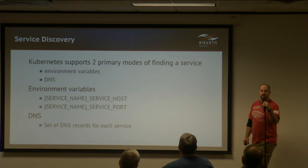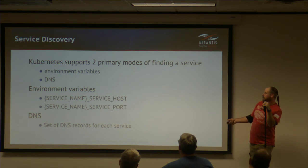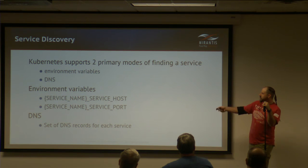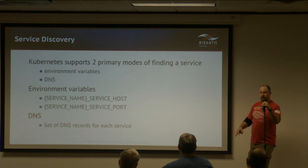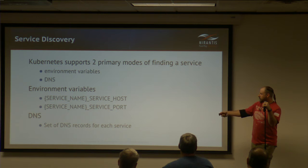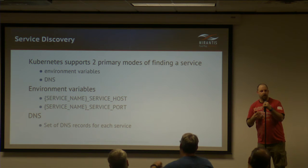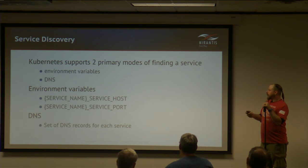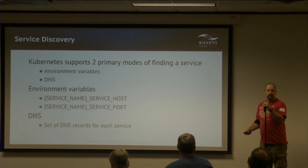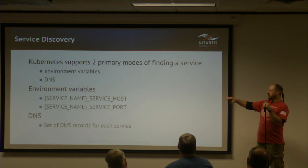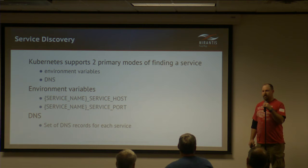Service discovery in Kubernetes uses two approaches: environmental variables in the pattern SERVICE_NAME_SERVICE_HOST and SERVICE_NAME_SERVICE_PORT, making it easy to reference services like a database. DNS records are also set for each service — a nice feature not all orchestration platforms provide. In other platforms you may need unique identifiers or different methodologies entirely.